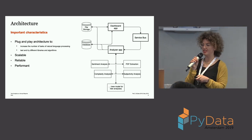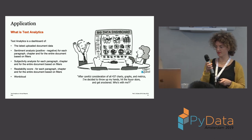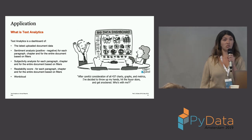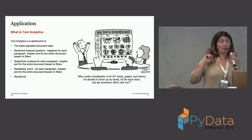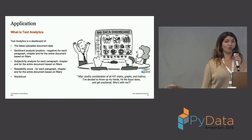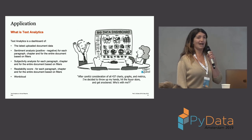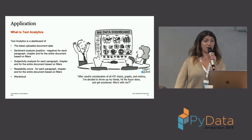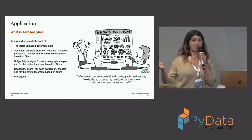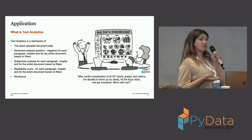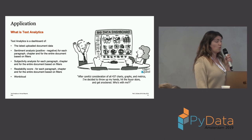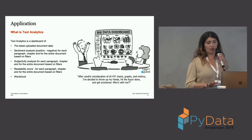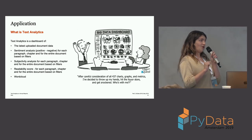Text analytics is the high-level overview of what we built, and it's currently working and already being used by our internal users. It's a big data dashboard, but not with 400 charts — we tried to improve the UX. I'll show some screenshots since we weren't allowed to show it live. It shows the sentiment analysis, subjectivity, readability score, and also a word cloud, which was added at the last minute. All of this is based on off-the-shelf libraries.